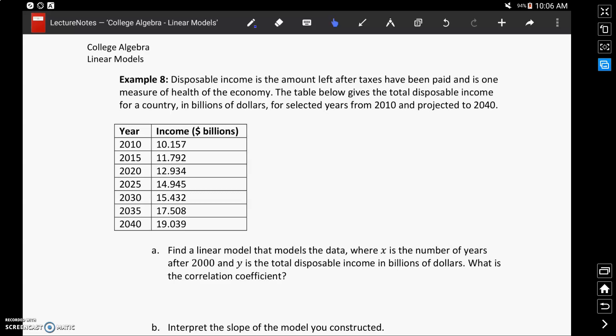Example 8 is going to be quite similar to Example 7, but we do have at least one difference at the beginning here that we need to take care of. We're given data on the disposable income for different countries for different years, but then what we're told is to look at constructing our model or complete this problem in Part A, where X is the number of years after 2000.